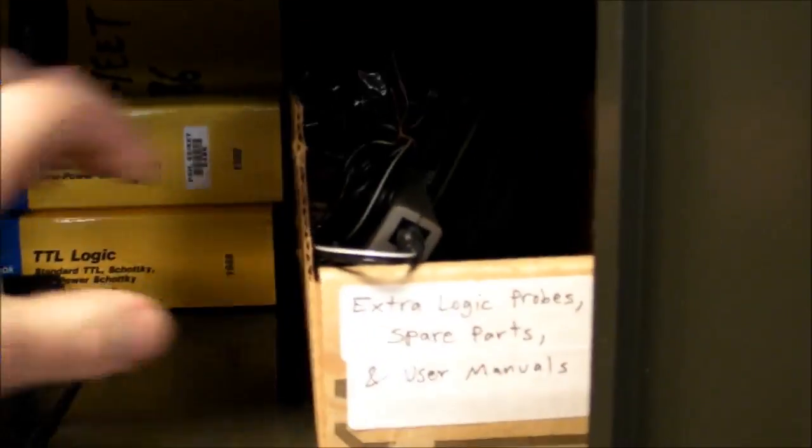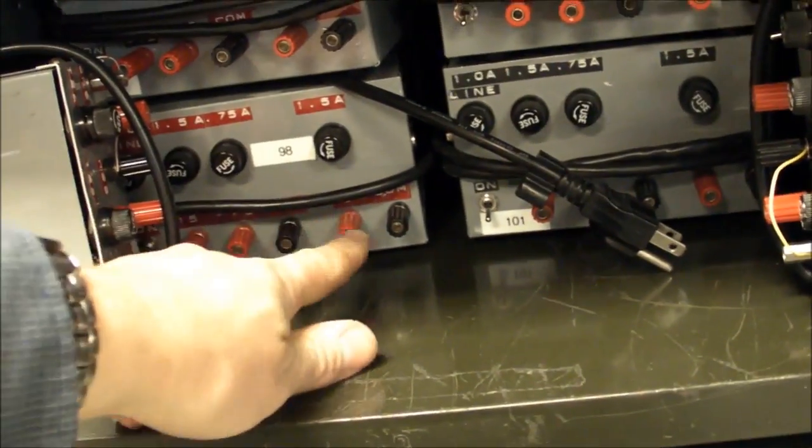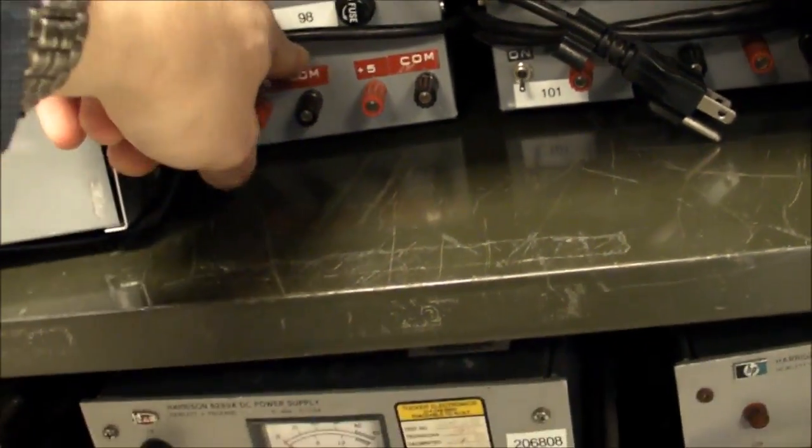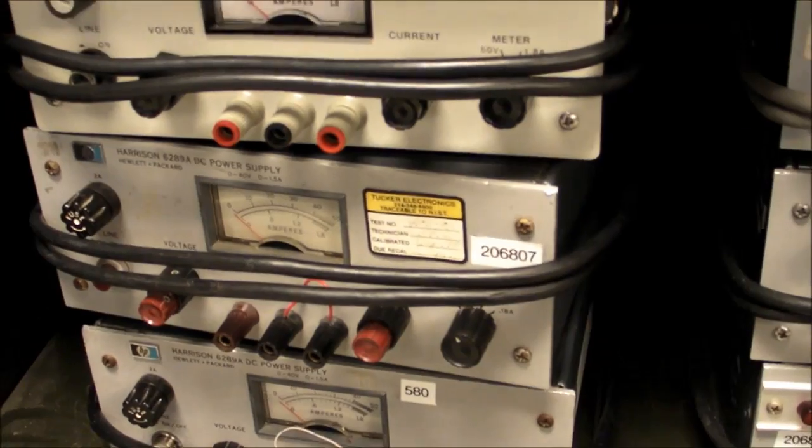And we've got logic probes, TTL data books, some extra logic probe stuff there and down here we got the fixed plus minus 15 volt supply, some of them have a 5 volt output as well and some of the larger variable supplies here that can put out a good 1.5 amps or so.